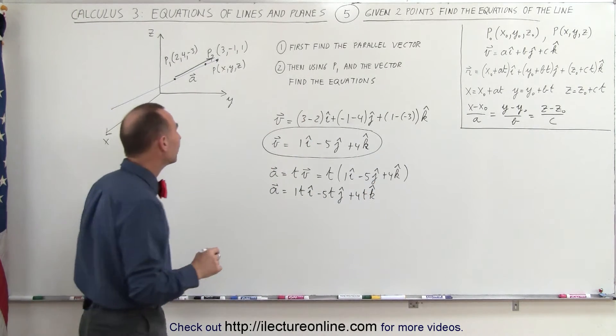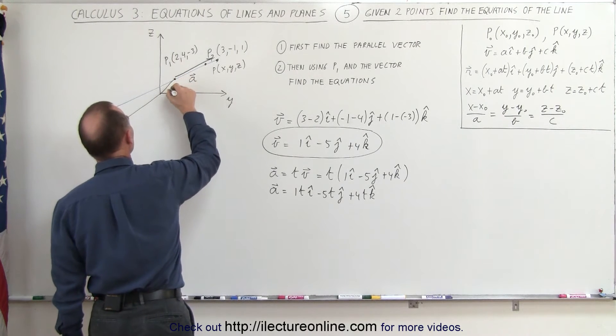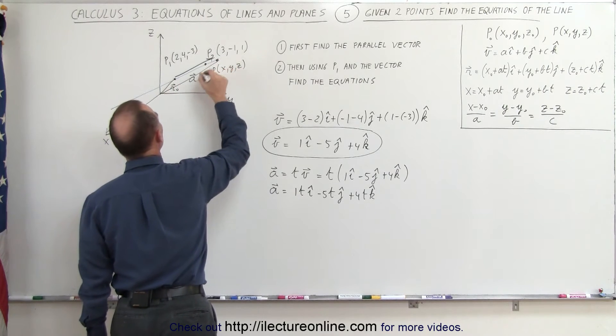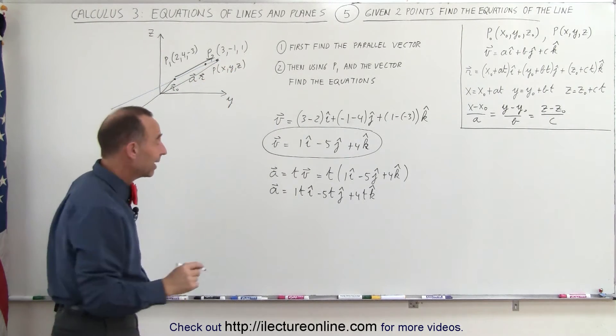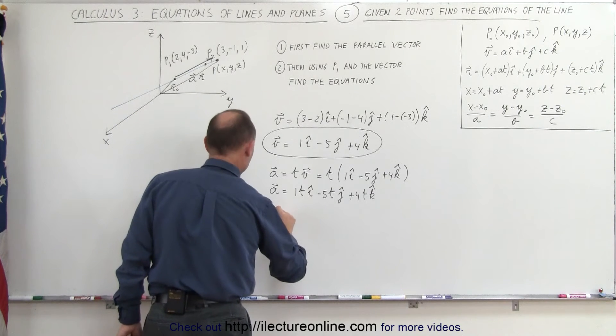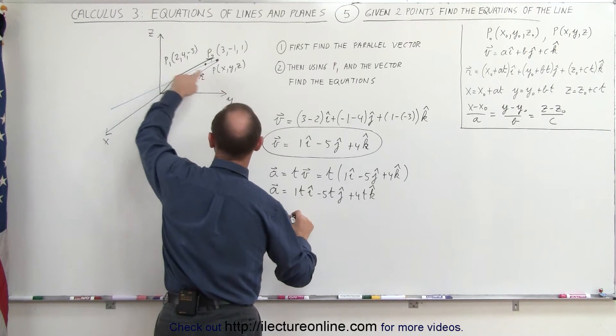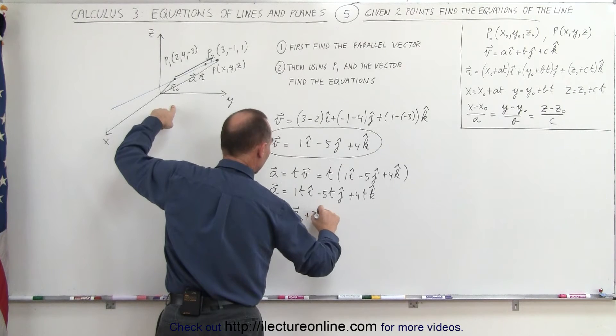We now write the following vector. We have a vector that we can then write to point 1. We call that the r sub not vector. Now we have a second vector, which points to the point x, y, z. We can then say that the r vector pointed to the arbitrary point x, y, z is equal to the r sub not vector plus the a vector.